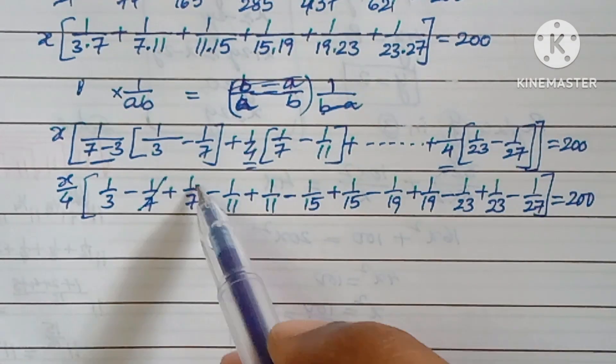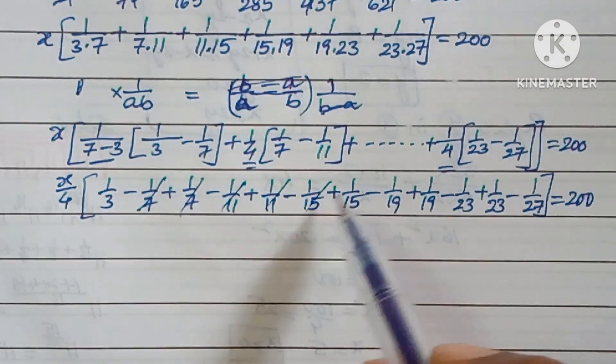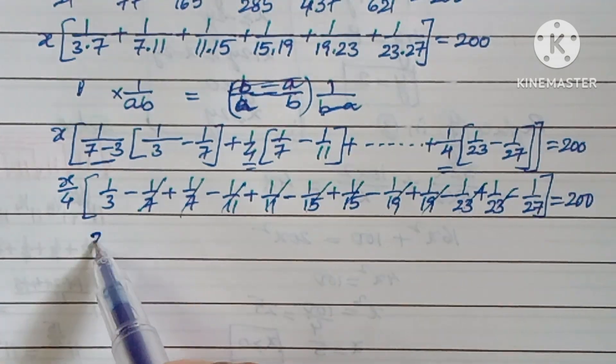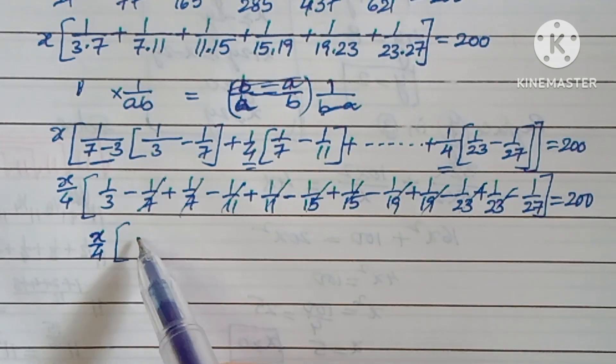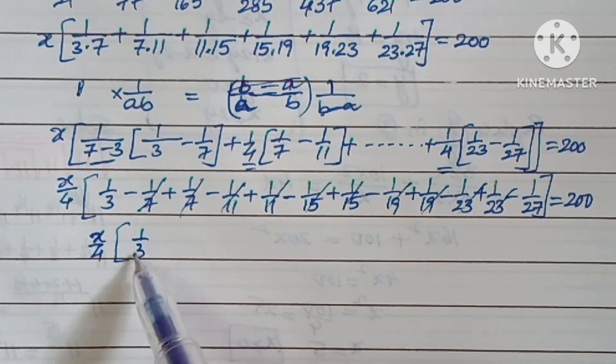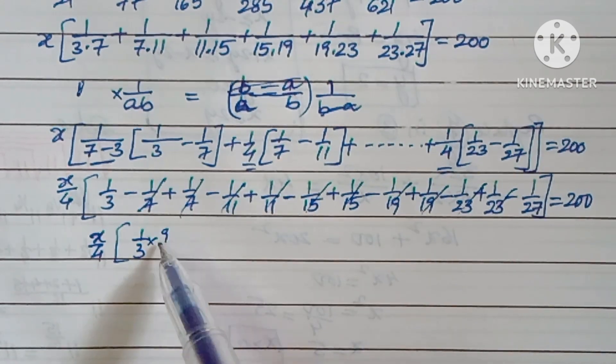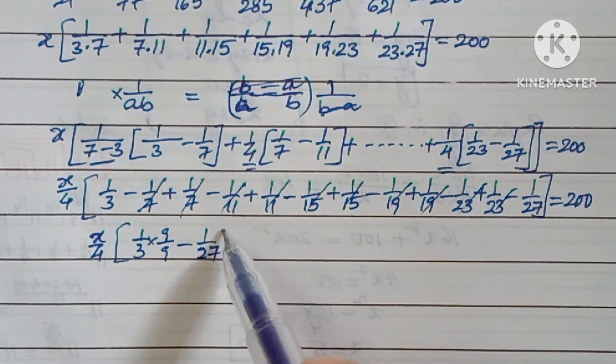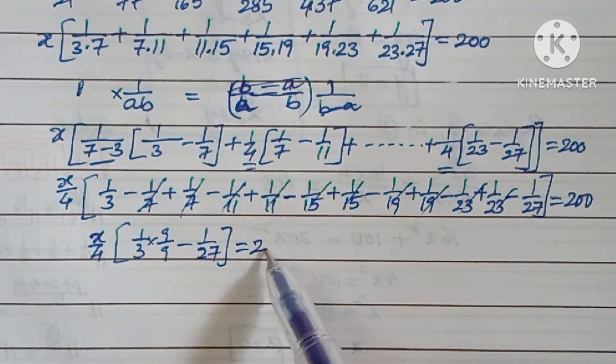Now these positive and negative terms get cancelled. Only the first one and the last term will be left over. x/4 × (1/3 - 1/27) = 200. Multiplying by 9 to make the denominator equal, x/4 × (9 - 1)/27 = 200.